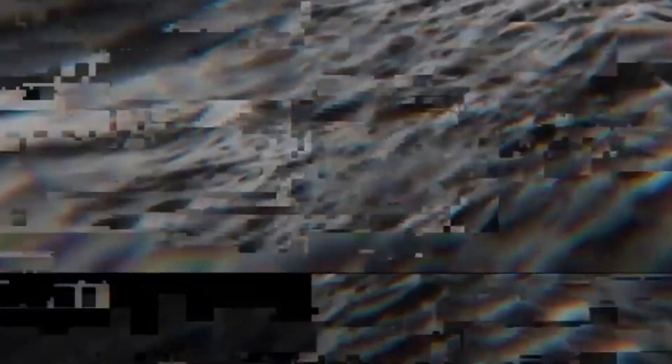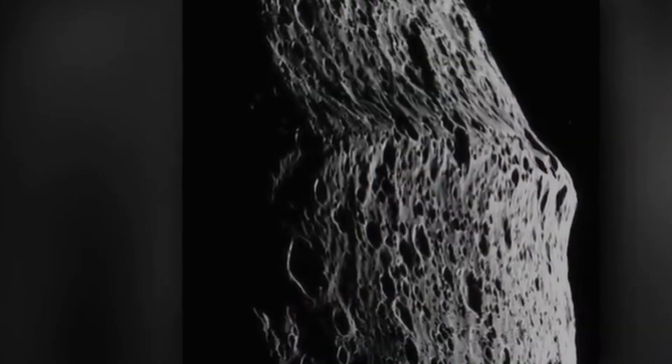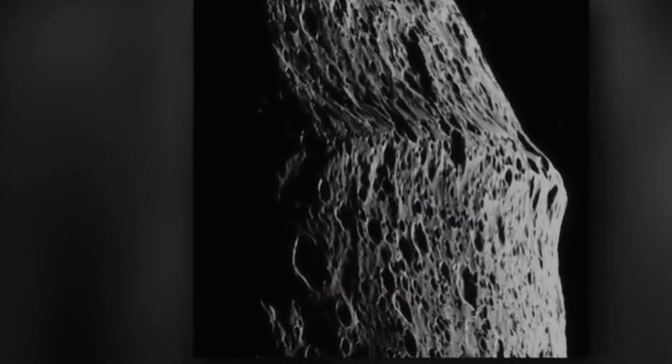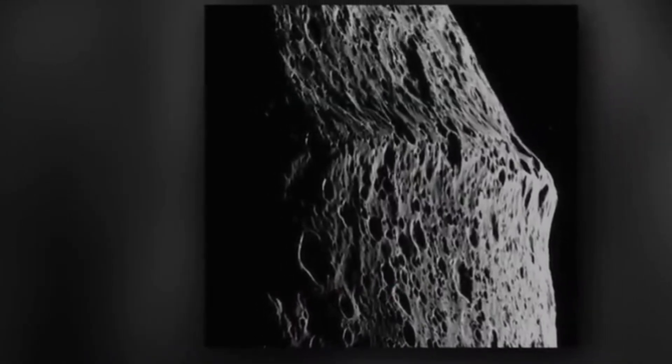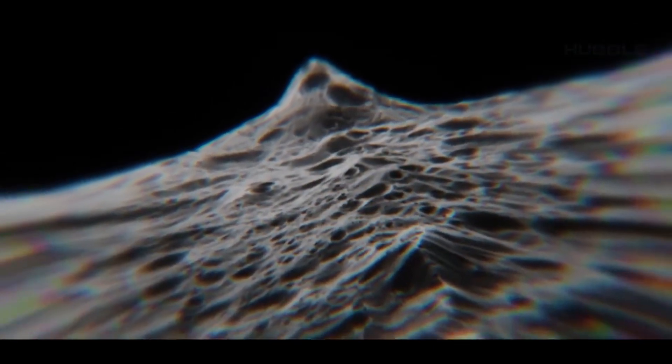Iapetus is considered a strange satellite in the solar system, not only because of its bicolor. It is also notable for the fact that on its equator, there is a mountain range called the Iapetus Wall.